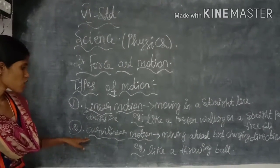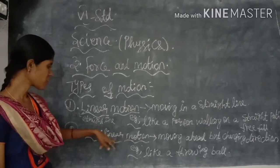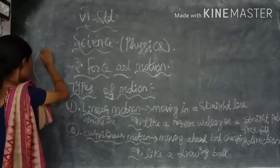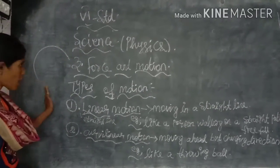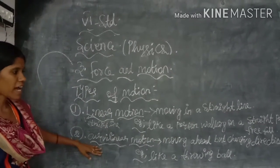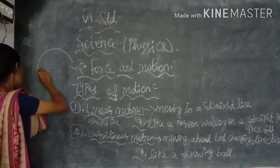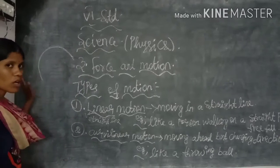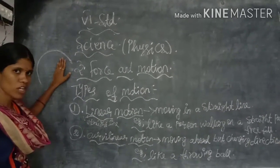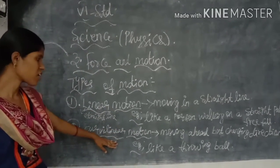The next one is curvilinear motion. Curvilinear motion refers to movement along a curved path — like a half circle. It starts from one direction and ends in another direction, so there is a change in direction. That is known as curvilinear motion. For example, a throwing ball.